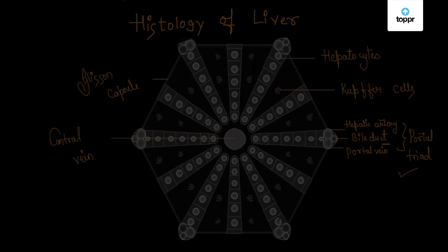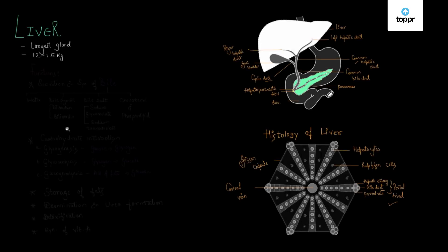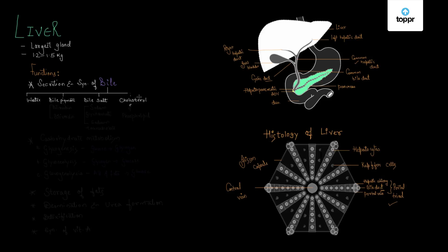Let us now observe some functions of the liver. First, it helps in the secretion and synthesis of bile. Bile is a fluid substance consisting majorly of water, bile pigments, bile salts, cholesterol, and phospholipids. Water forms the solvent part of bile. The bile pigments are bilirubin and biliverdin, and the bile salts are sodium glycocholate and sodium tauroglycocholate.